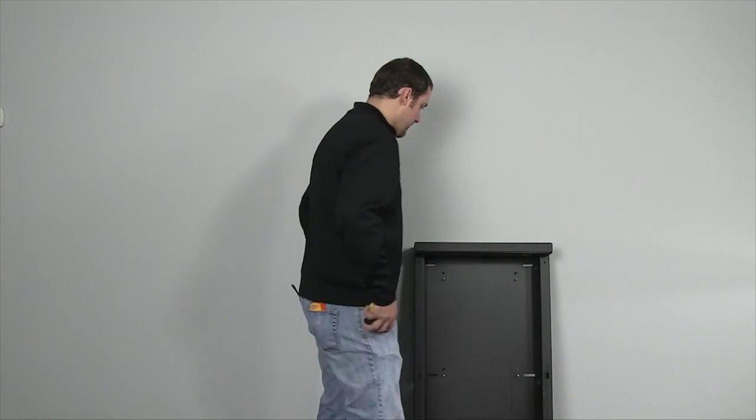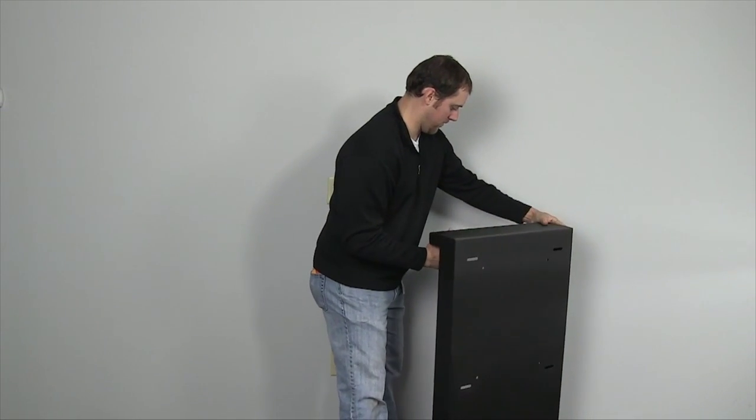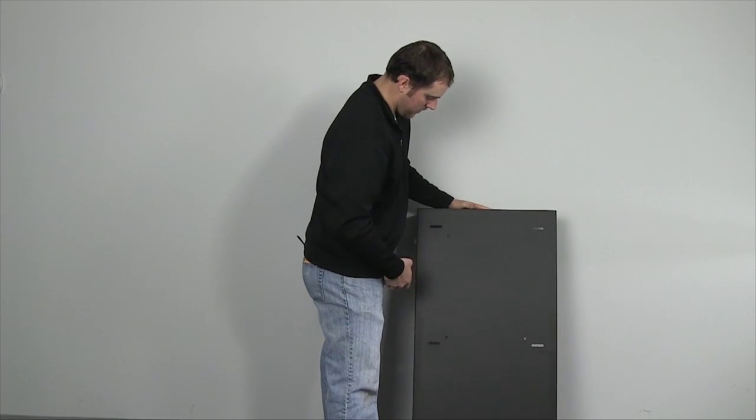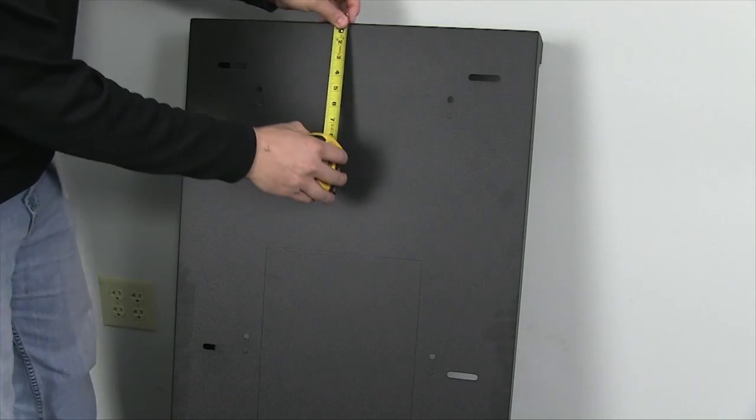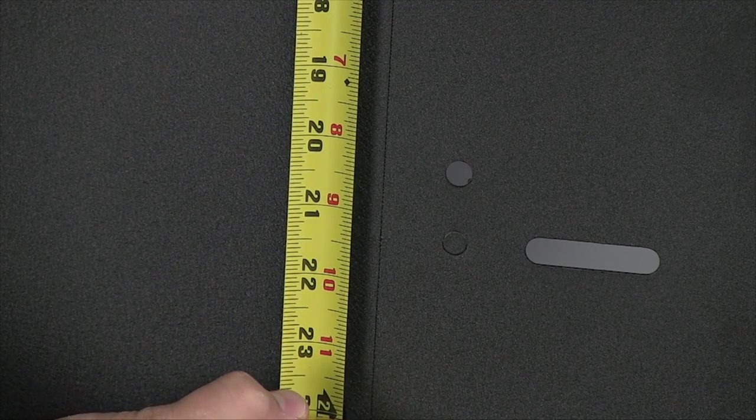The NW1 wall racks are shipped in a single package but with the front and rear rack sections unassembled for an easier installation. The first step before mounting the NW1 series wall rack is to find the center line of the rear rack section.